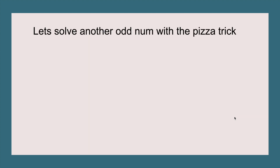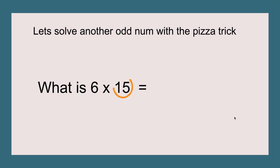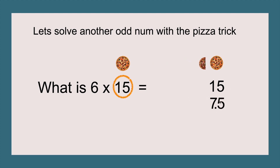Let's solve another odd number with the pizza trick. What is six times fifteen? Circle the fifteen and put it right here. The half of fifteen is seven point five. When we are using odd numbers and we have more than one digit in the odd number, you don't have to add a placeholder — otherwise you're going to get the wrong answer. Seven point five is a decimal, so we take away the dot to make it seventy-five. And that equals ninety. Ninety is our answer, and six times fifteen equals ninety.